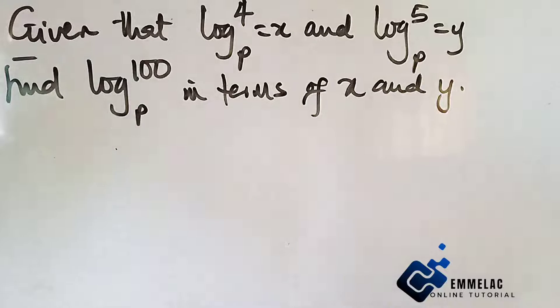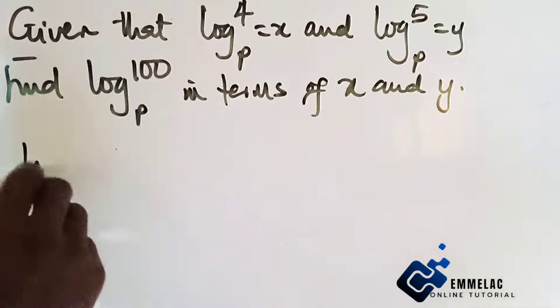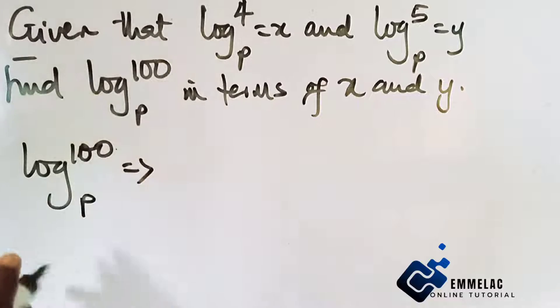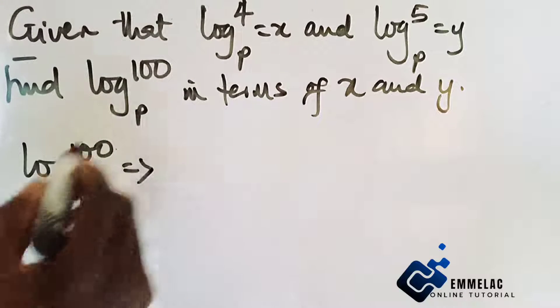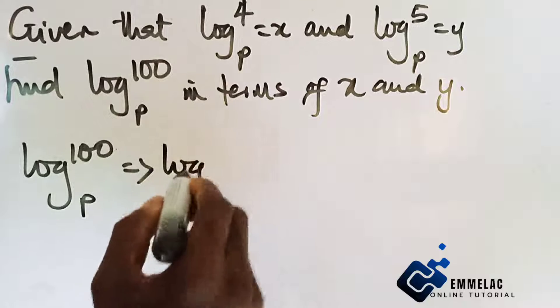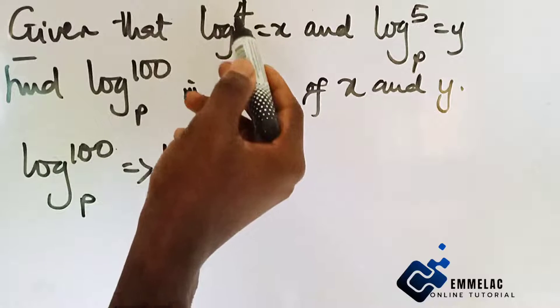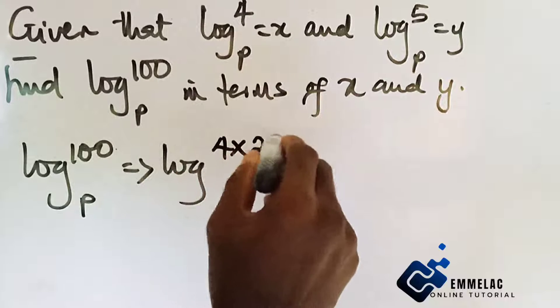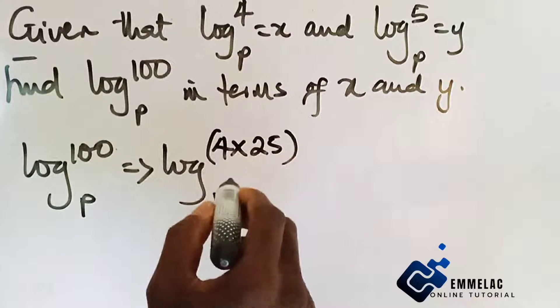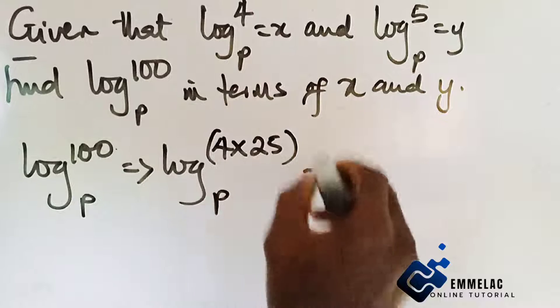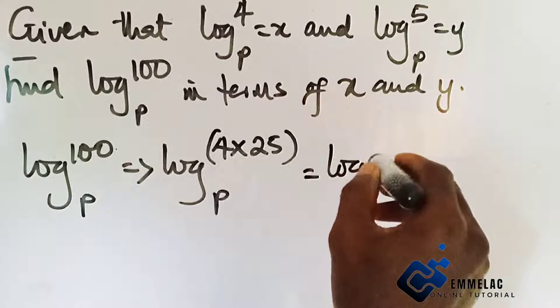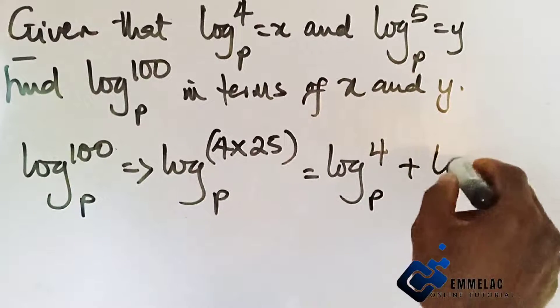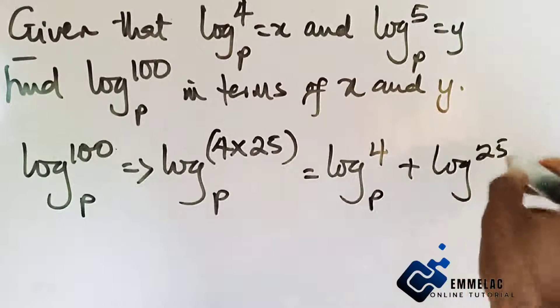Very simple. What we need to do here is say log base p of 100 is the same as splitting the 100 to a factor that will give you 4 and 5, and that is 4 times 25 base p, which will also reconcile by giving us log base p of 4 plus log base p of 25.